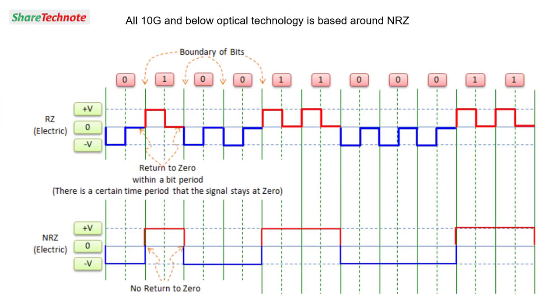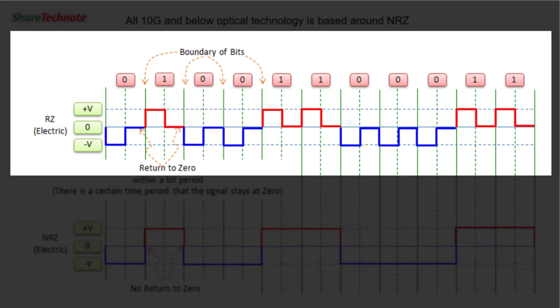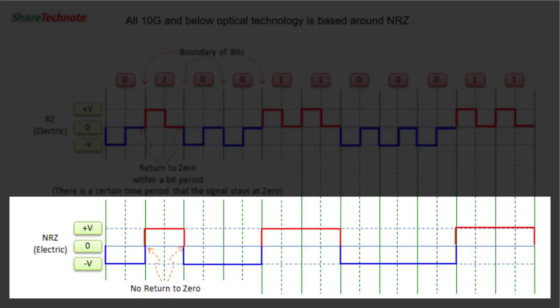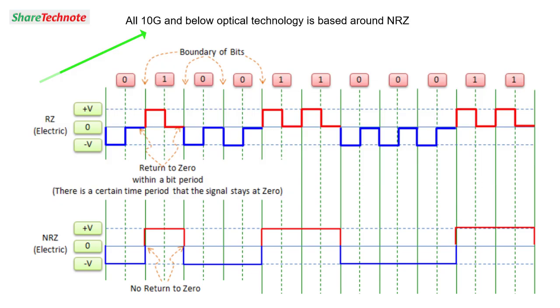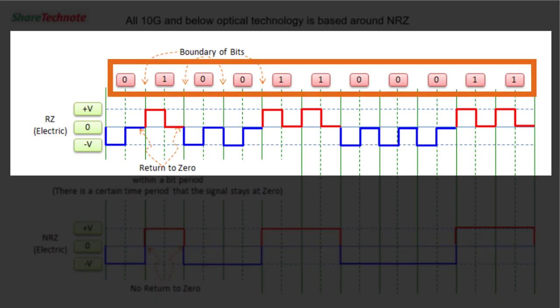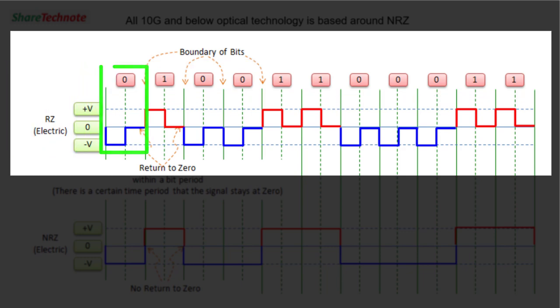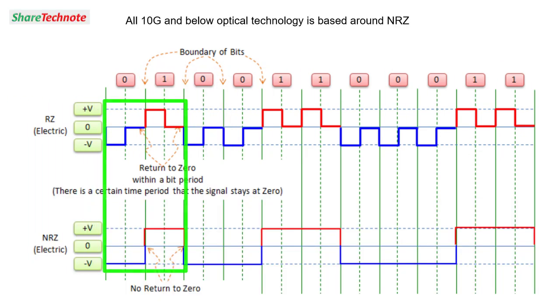Shown in this diagram are two very popular encoding techniques. One is return to zero and non-return to zero. All 10 gig and below optical technology is based on non-return to zero. Let's look at return to zero first. You can see the binary bits above. You can see that for any period of time, the pulse goes low and then comes back up to zero until a period where we go to a binary high. And then the pulse goes high and comes back down at some period back to zero. If you'll look at the pattern, it's totally different from the non-return to zero pattern below.